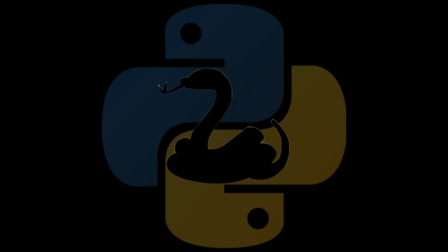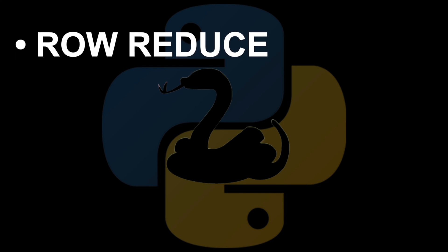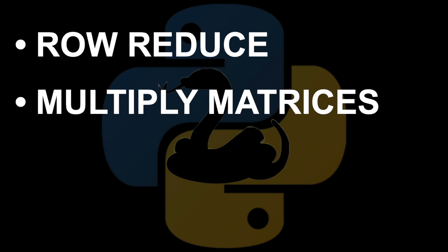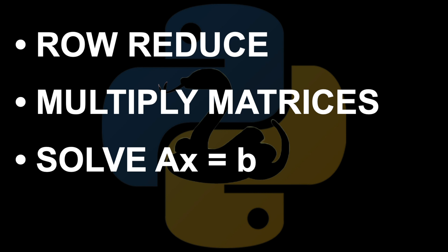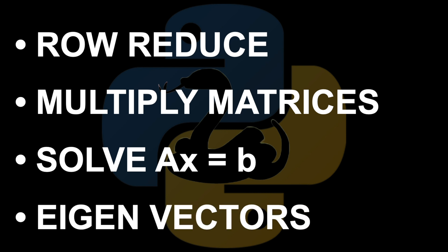In this video, we will use Python on matrices to row reduce, to multiply matrices, to solve the linear system Ax equals b, and finally to get eigenvectors and eigenvalues. This is done in Python using SymPy, which will print output like LaTeX or Wolfram Alpha. That's good enough for this intro — let's get started.